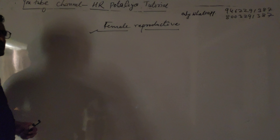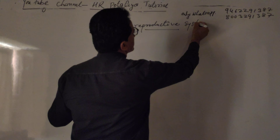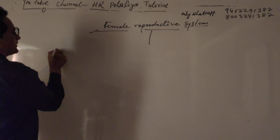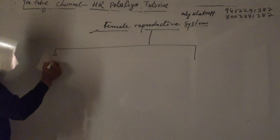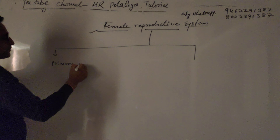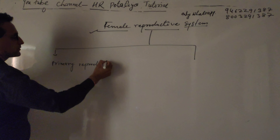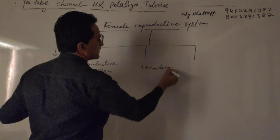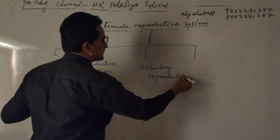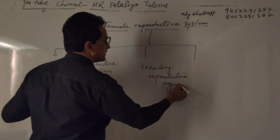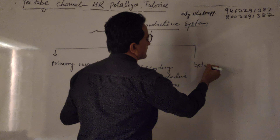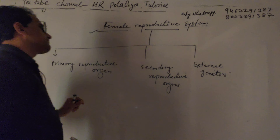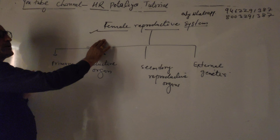Whatever type of reproductive system is there — male or female — we have classified it into three parts. First is the primary reproductive organ, second is the secondary reproductive organ, and lastly the external genitalia.